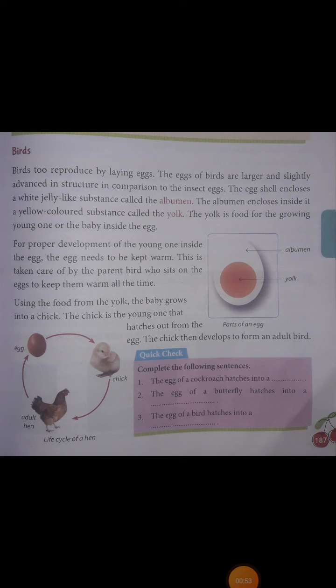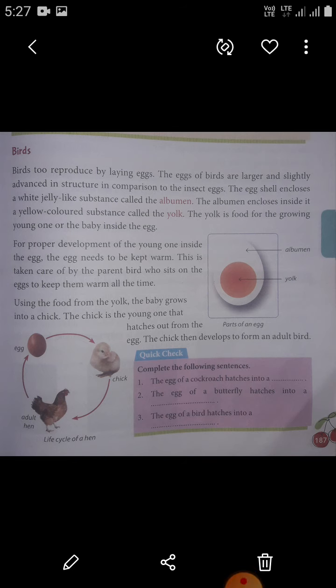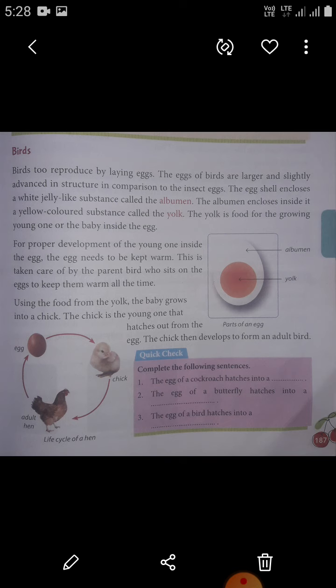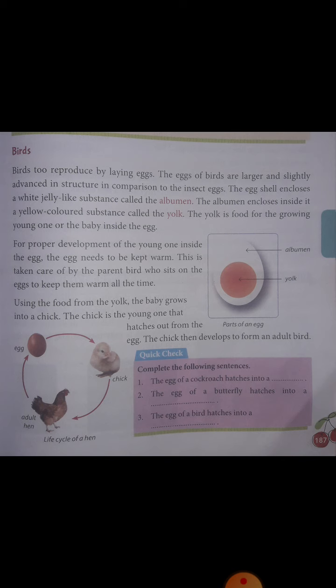Birds reproduce by laying eggs. The eggs of birds are larger and slightly advanced in structure compared to insect eggs. The egg shell encloses a white jelly-like substance called the albumin. The albumin encloses inside it a yellow-colored substance called the yolk. The yolk is food for the growing young one inside the egg.